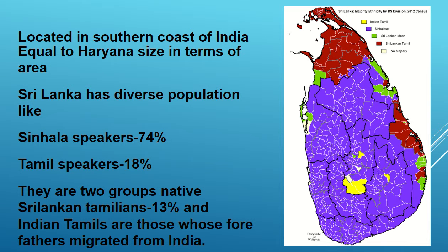Now moving on to the actual statistics. Sri Lanka has an area similar in size to Haryana, which is also equal to the size of Belgium, and has a population of nearly over 2 crore. The statistics show clearly that the blue shade — the Sinhalese — are in majority, accounting for 70 percent, while Tamil speakers account for 18 percent including both the yellow and brown regions.